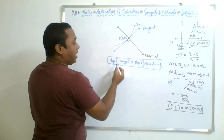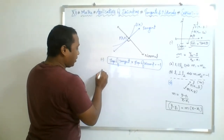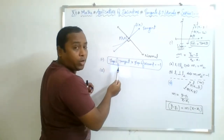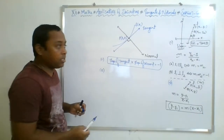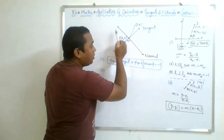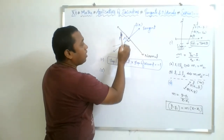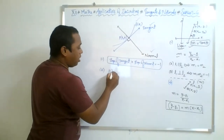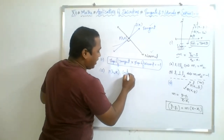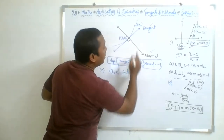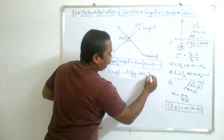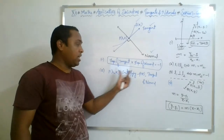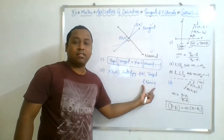Remember, h comma k is the point where the tangent and the normal are constructed to the curve. This means h comma k lies on f of x, lies on the tangent, and lies on the normal. Hence we could say this point h comma k satisfies f of x, the tangent, and the normal. You can substitute this h comma k point in the curve equation, in the tangent equation, and in the normal equation.